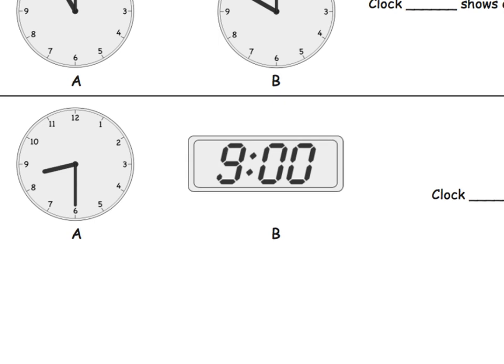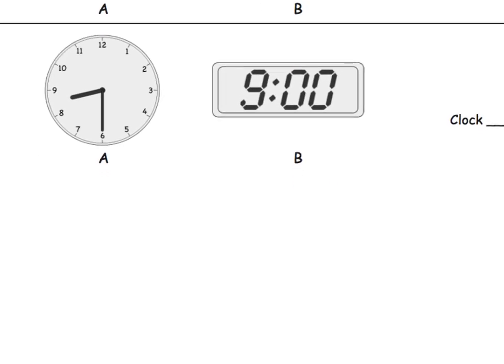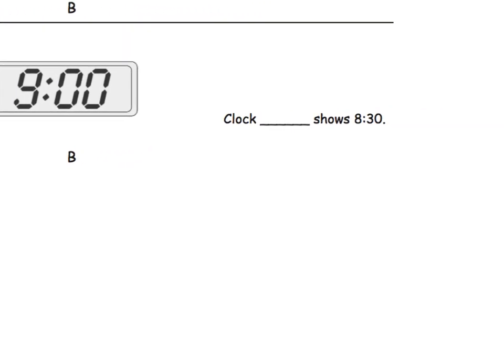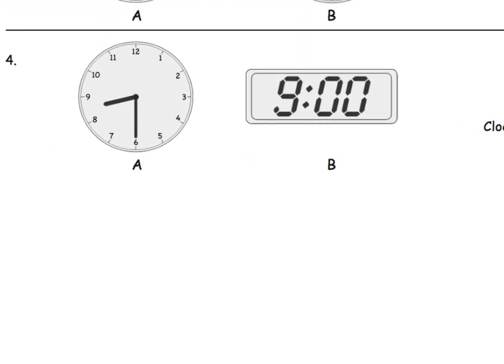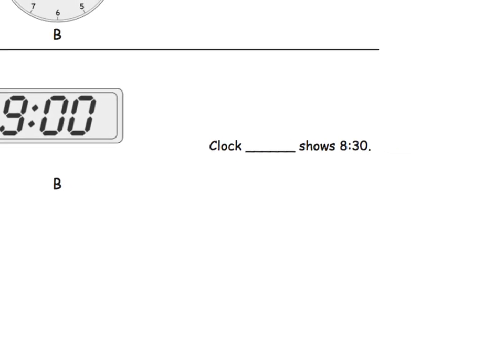So, we've got these two clocks, A and B, and we want to know which clock shows 8:30. Does this one show 8:30, or does this one show 8:30? And we see that it's answer A. It's clock A.